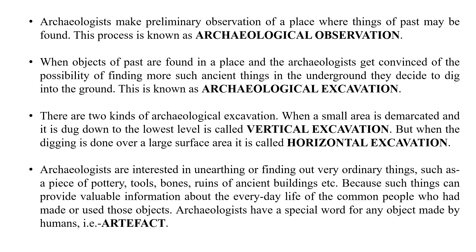Archaeologists make preliminary observation of a place where things of the past may be found. This process is known as archaeological survey. When objects of the past are found and archaeologists are convinced of the possibility of finding more ancient things underground, they decide to dig into the ground — this is known as archaeological excavation. There are two kinds: when a small area is demarcated and dug down to the lowest level, it is called vertical excavation; when digging is done over a large surface area, it is called horizontal excavation.